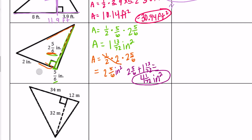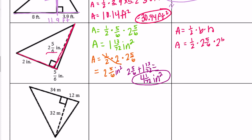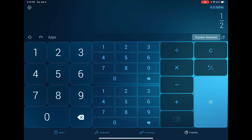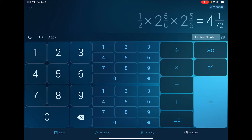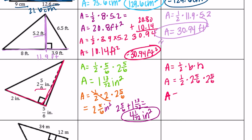Now the whole triangle at once: area equals one-half times base times height. The base is 2 plus five-sixths, which is two and five-sixths, and the height is also two and five-sixths. So one-half times two and five-sixths times two and five-sixths equals four and one seventy-second inches squared — equal to what we got with two right triangles.